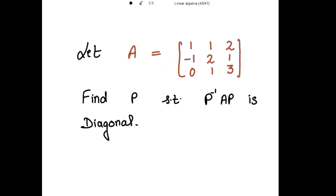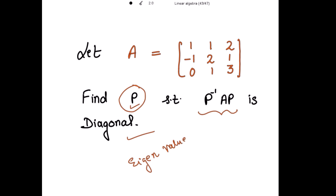Let A be a 3x3 given matrix and we need to find P such that P inverse AP is a diagonal matrix. To find such P, we need to first find the eigenvalues of A, then find the corresponding eigenvectors. From these eigenvectors we get the matrix P. Let's start with the solution.